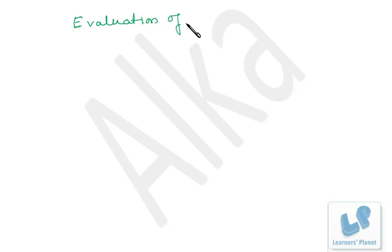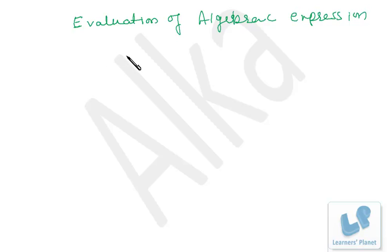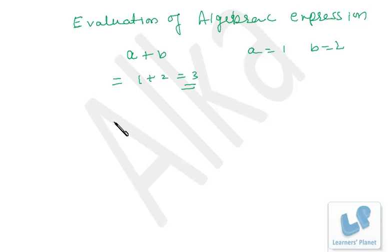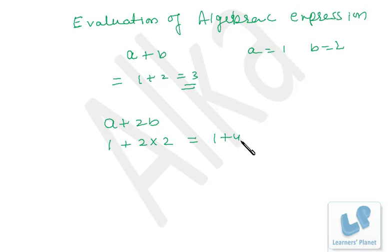Now let's learn to evaluate algebraic expressions. Suppose I have the expression A plus B, and A is 1 and B is 2, then A plus B equals 1 plus 2, that is 3. For A plus 2B with A equals 1 and B equals 2, it's 1 plus 2 times 2, which is 1 plus 4, that is 5.